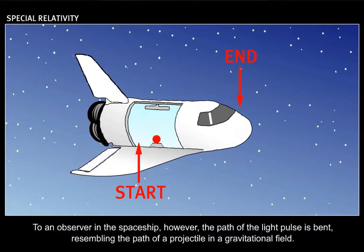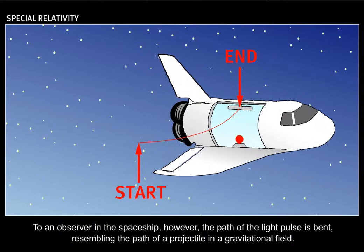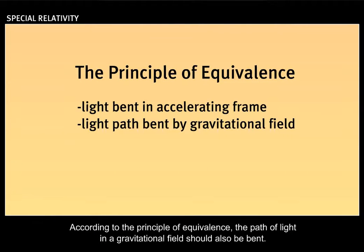To an observer in the spaceship, however, the path of a light pulse is bent, resembling the path of a projectile in a gravitational field. According to the principle of equivalence, the path of light in a gravitational field should also be bent.